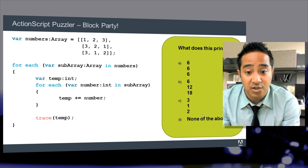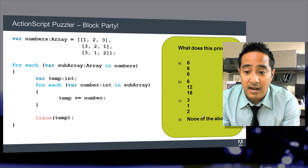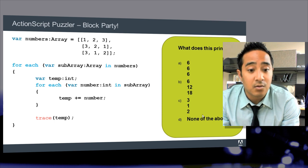So the very first subarray, we should be adding 1 plus 2 plus 3, which is 6. We do the same for the second subarray, which is 3 plus 2 plus 1, which is also 6. And finally the last subarray, which is 3 plus 1 plus 2, which is again 6.